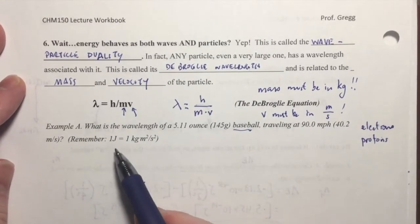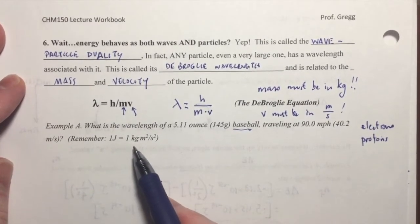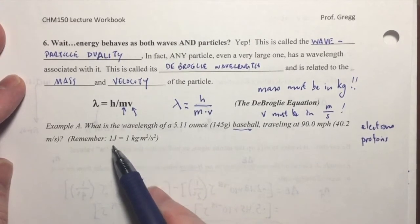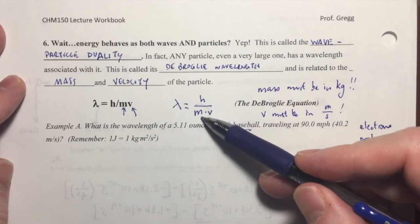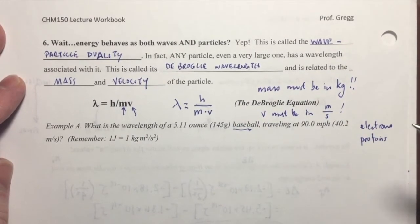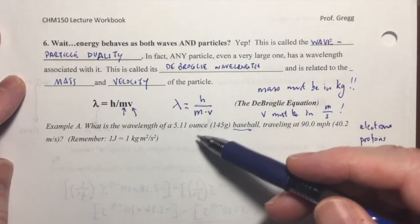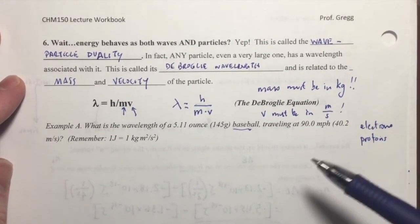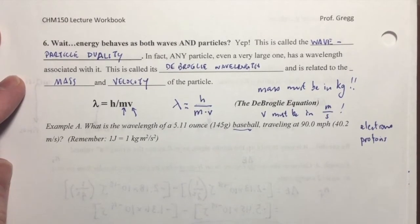So just as a reminder, a joule is one kilogram meter squared per second squared. So the kilogram is in the joule, and that's why that mass has to be in kilograms. Okay? So with that in mind, go ahead and do this problem. Pause the video, complete that work, get the answer in the correct sig figs and units. And when you're done, resume the video, and then I'll work through it. Go ahead.